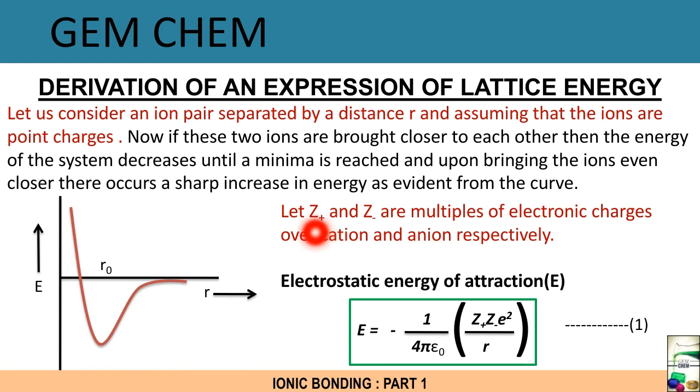If we consider Z+ and Z- are the multiples of electronic charges over cation and anion respectively, then we know from physics that electrostatic energy of attraction can be given as E = -1/(4πε₀) × (Z+Z-e²)/r. So this is the formula for electrostatic energy of attraction. Now we will see this graph in details.